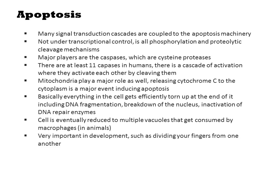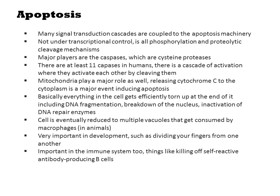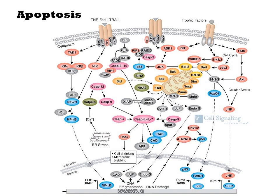Apoptosis is very important in development, such as dividing your fingers from one another, and is also important in the immune system — for example, limiting self-reactive antibody-producing B cells. Apoptosis isn't just for animals; plants do it too, and it's a common feature of development there as well. Keep in mind it's a very complicated process that is tied into many signal transduction cascades. The details of these diagrams aren't important for our purposes, but don't be fooled into thinking this is a simple process.